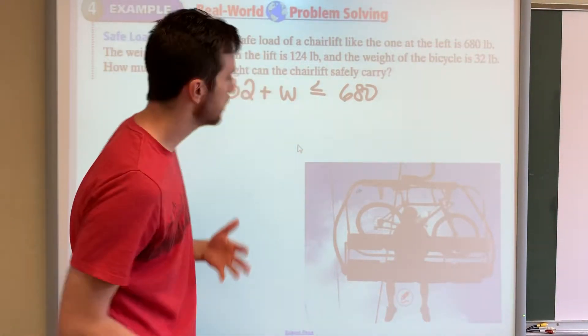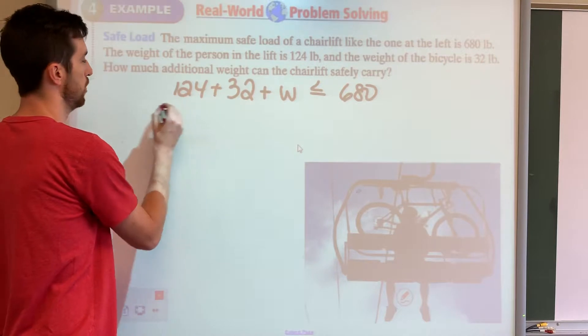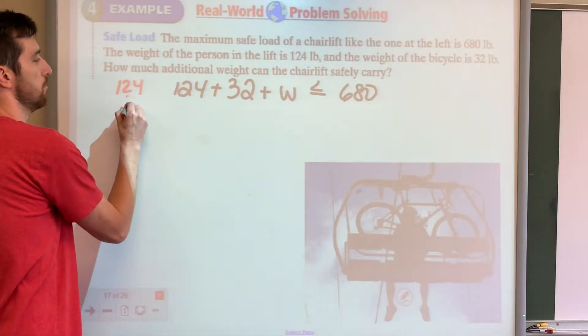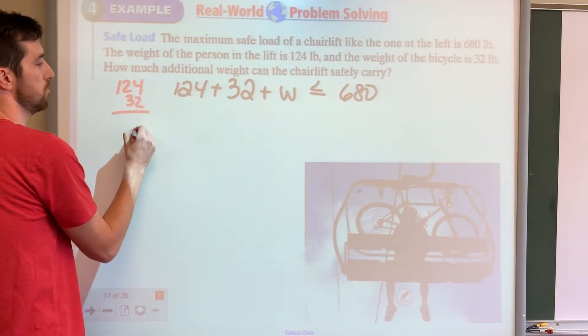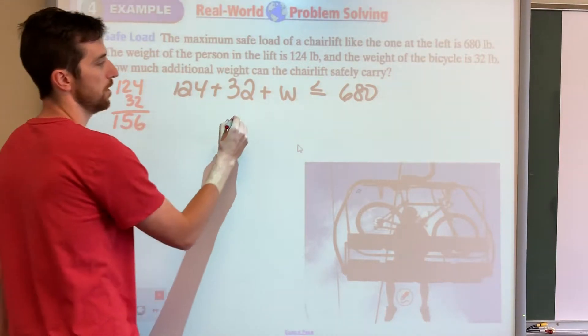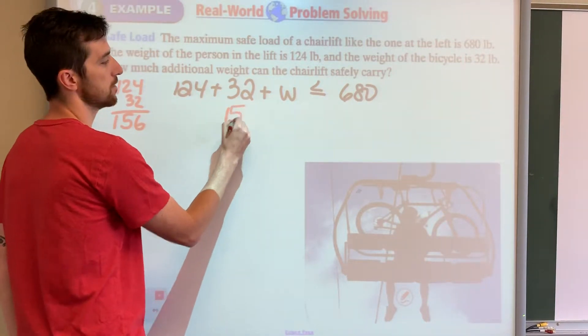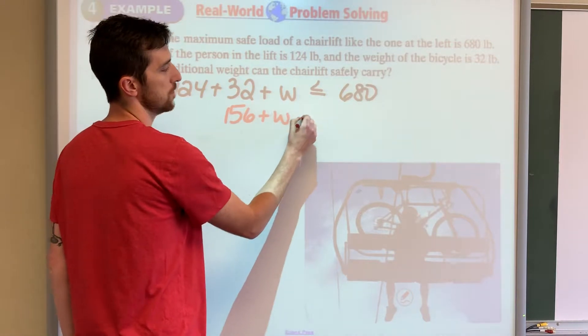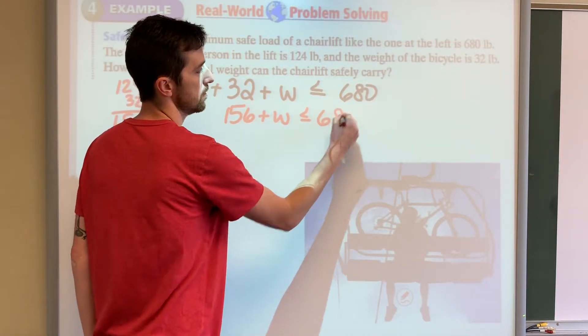So let's combine our like terms. 124 plus 32, 2 plus 4 is 6, 12 plus 3 is 15. So we have 156 plus W is less than or equal to 680.